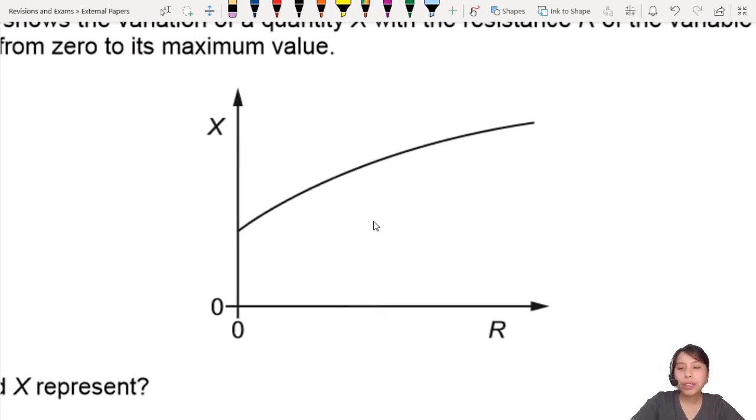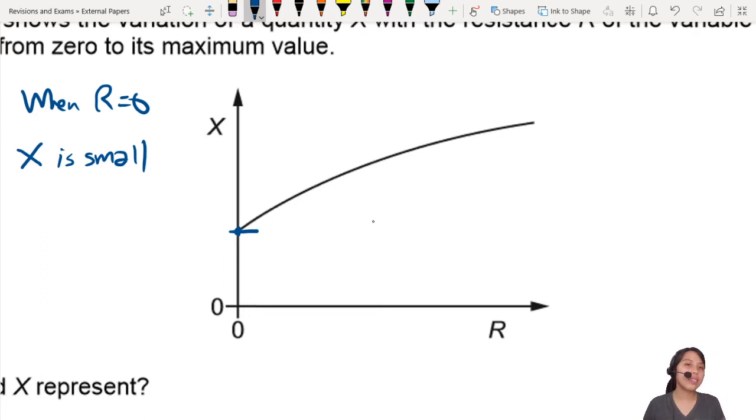You see all this, right? What can you understand or deduce from the graph? There are a few things you know. Number one, you know that when R is 0, like right here, X is small, but not 0. It's just small.